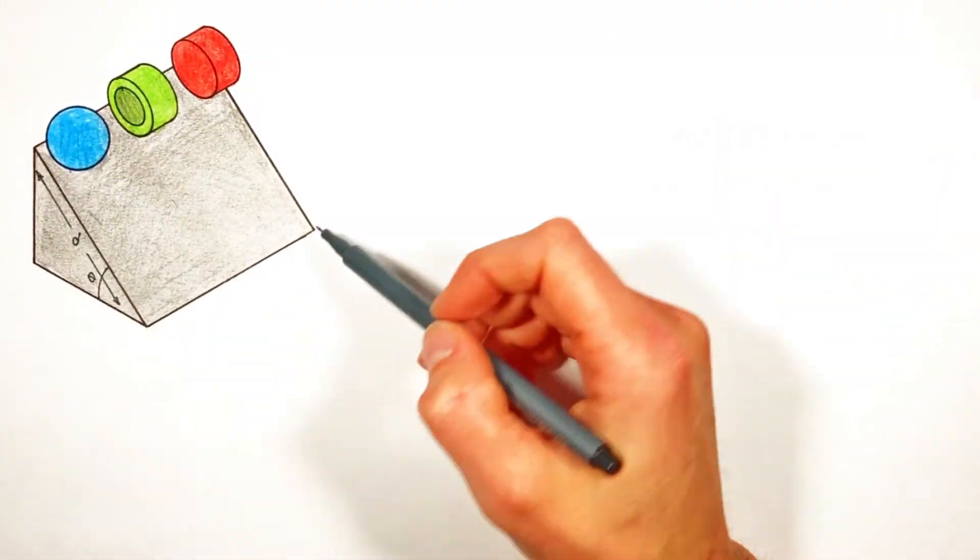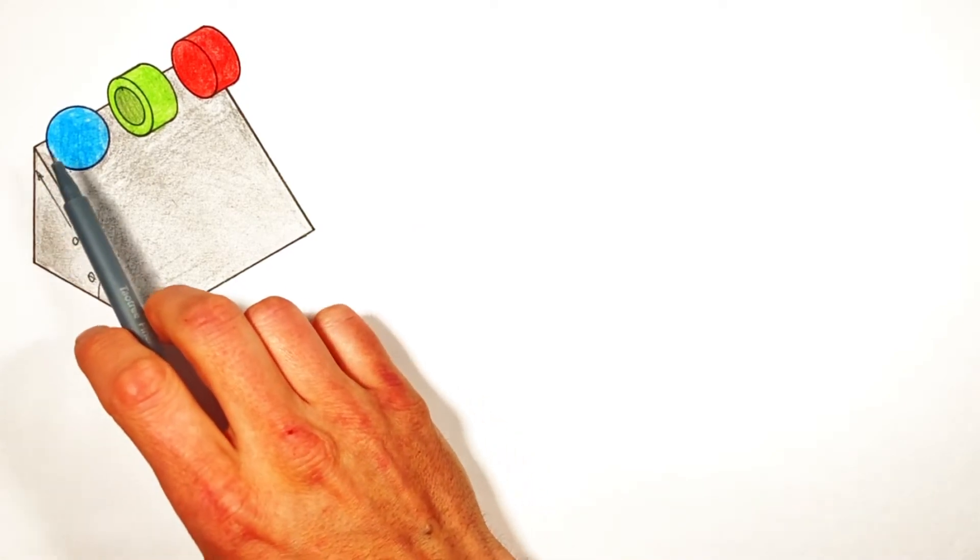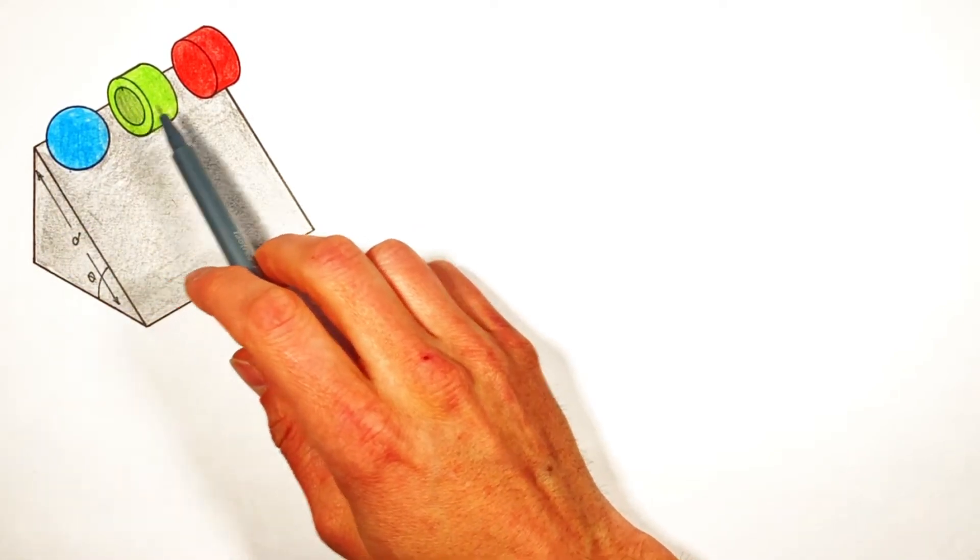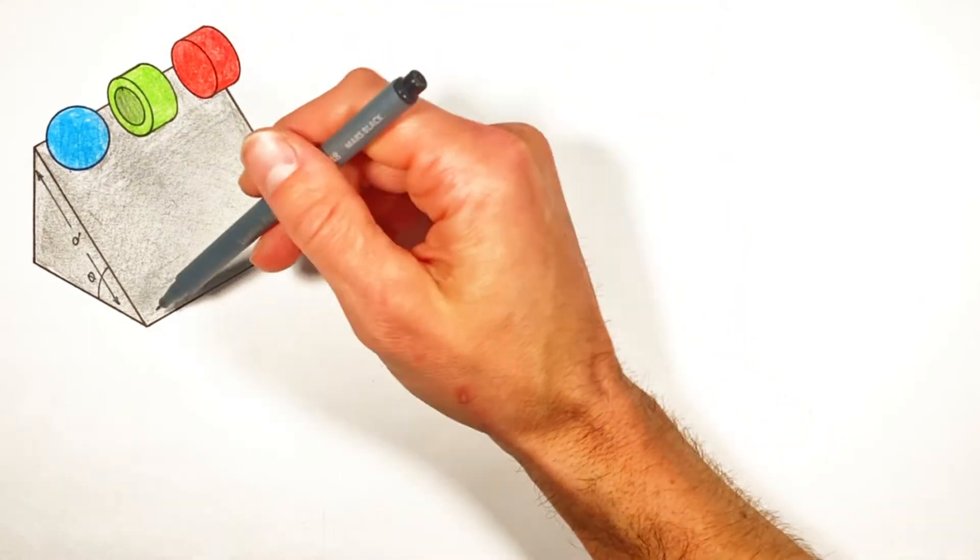All right, YouTube. Today we're looking at one of the classic problems in rotational physics, and that is the situation where we've got a sphere, a thin hoop, and a solid disk, and we're going to allow them to accelerate down this hill.